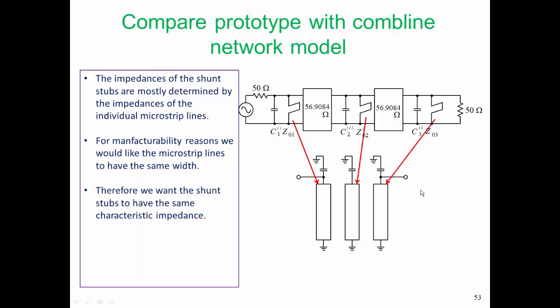we would like the microstrip lines to have the same width. Therefore, we want the shunt stubs to have the same characteristic impedance. So we're doing a physical consideration at the moment,